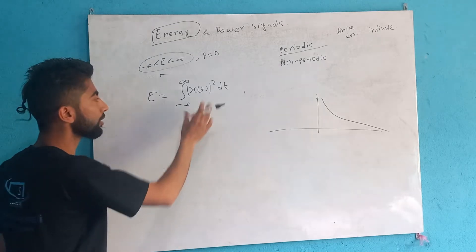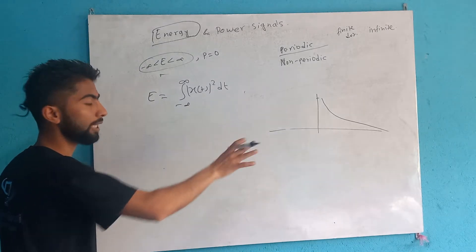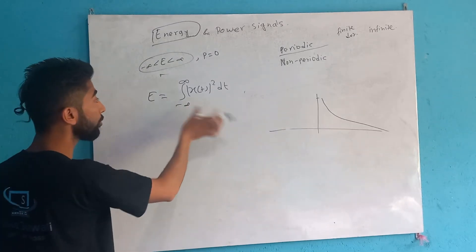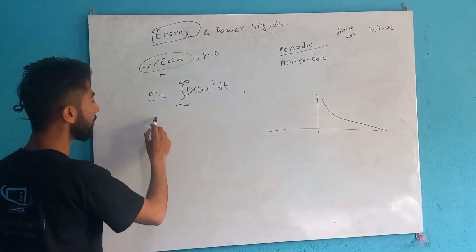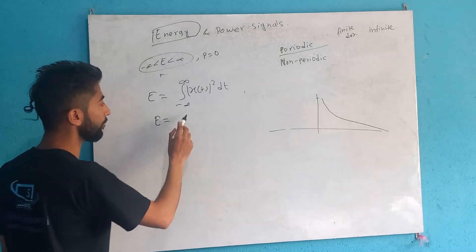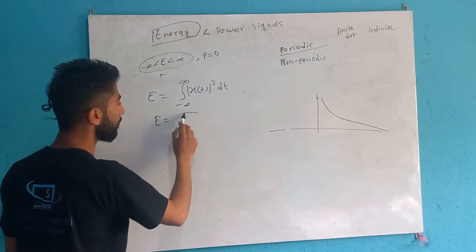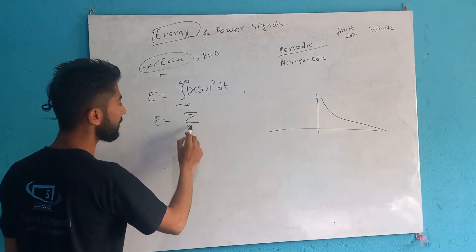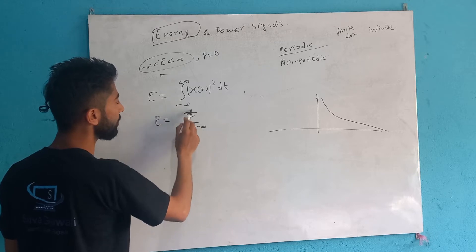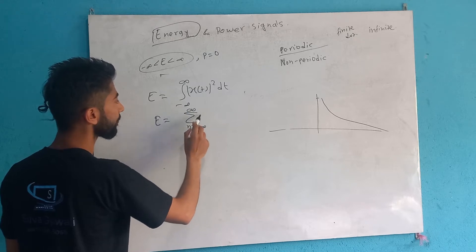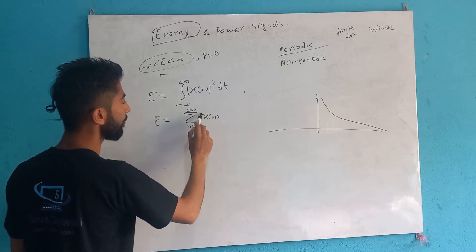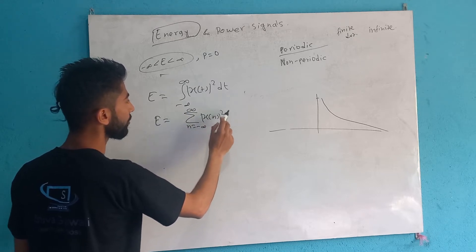So this is finite, from minus infinity to infinity — this is continuous. We have to define a discrete value. Summation from n equals minus infinity to infinity of x[n] magnitude squared.